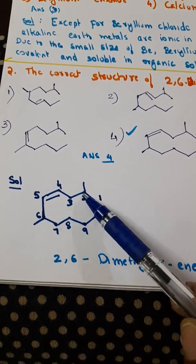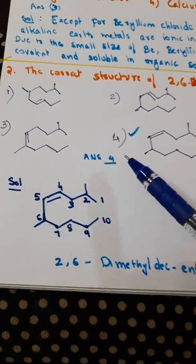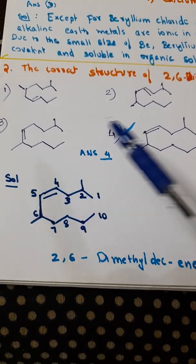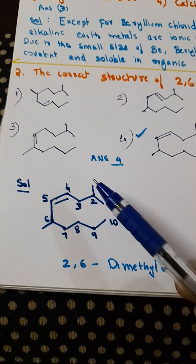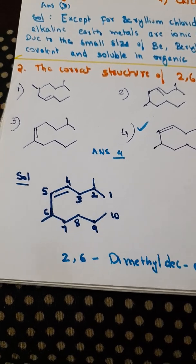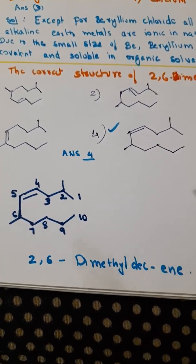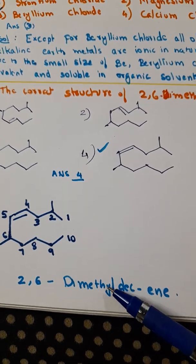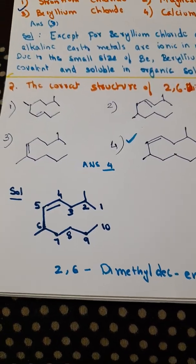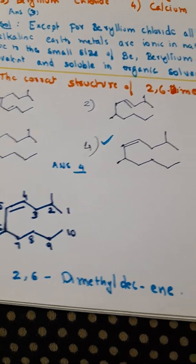See, 3 and 4 are same, but the position of the double bond is different. When you write the long structure, you will know that - we will do that in some other session. Option 4 is the correct answer. Clear? Moving on to the next question.